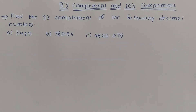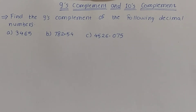We will discuss 9's and 10's complement. The 9's complement of a decimal number is obtained by subtracting each digit of that decimal number from 9. The 10's complement of a decimal number is obtained by adding 1 to the 9's complement. We will see how this is obtained by solving the following examples.